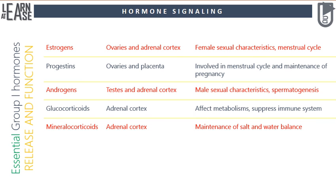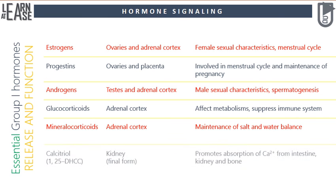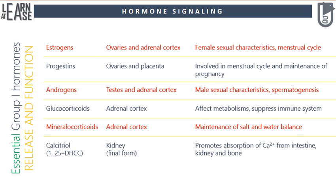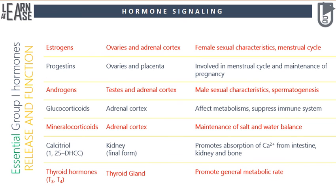Fifth, mineralocorticoids — produced and released by the adrenal cortex, essential for maintaining salt and water balance in the body. Sixth, calcitriol — its final active form is released by the kidney, and its role is to promote absorption of calcium ions from the intestine, kidney, and bones. Seventh, thyroid hormones — produced and released by the thyroid gland, they are key hormones in maintaining metabolic homeostasis by controlling all anabolic and catabolic processes in the body.